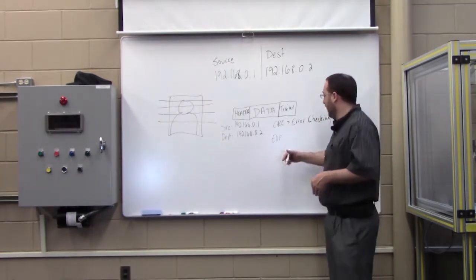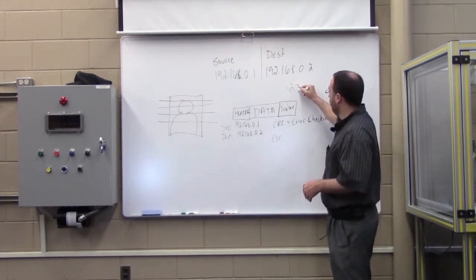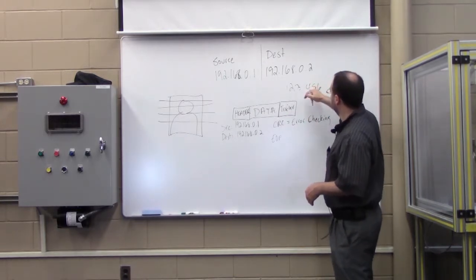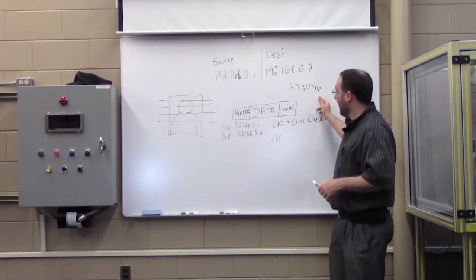Basically, it's a mathematical formula. It gives us an answer. So let's say that answer is 1, 2, 3, 4, 5, 6. That's a terrible 3. 1, 2, 3, 4, 5, 6. Let's say that's the answer to this.